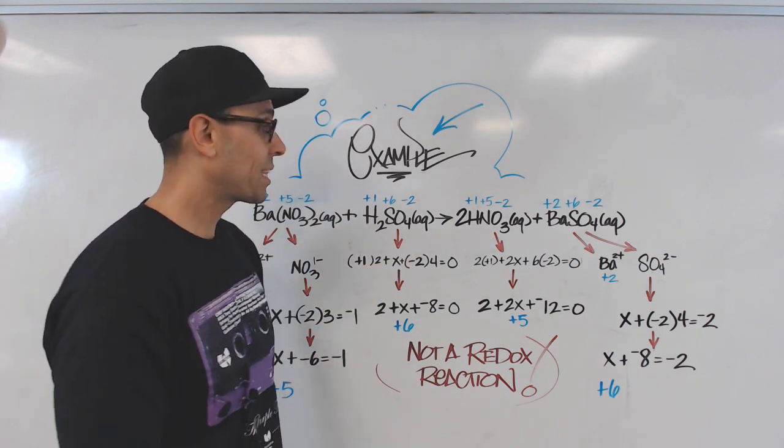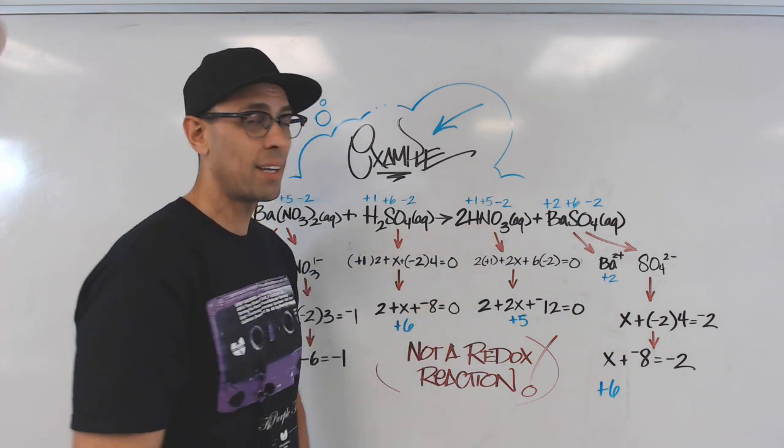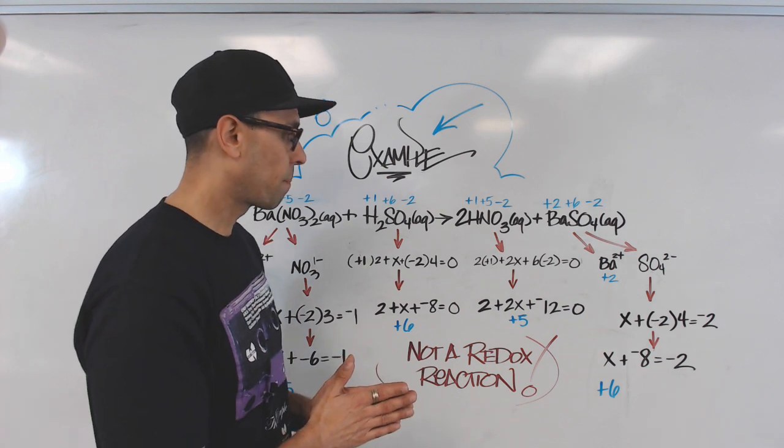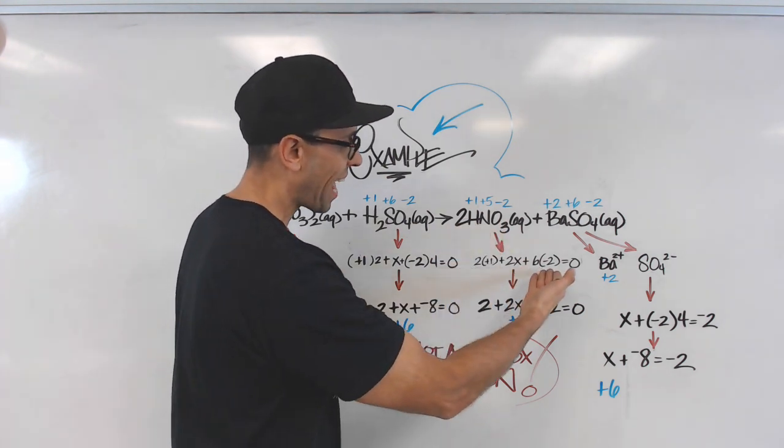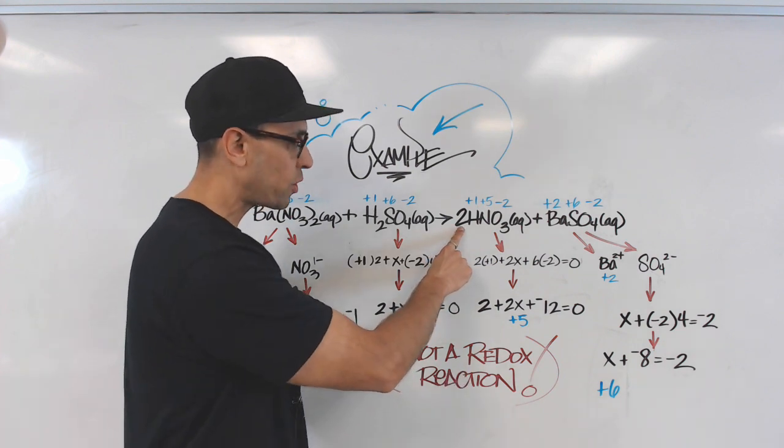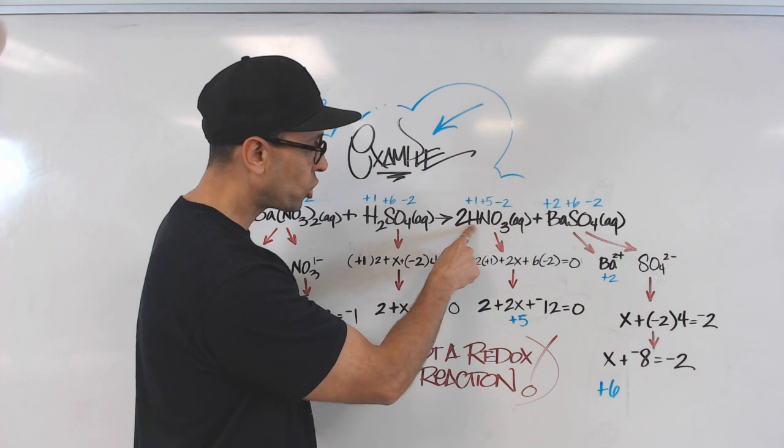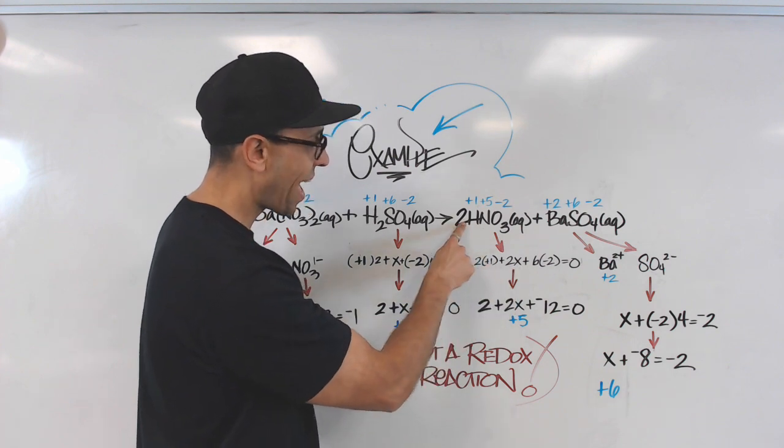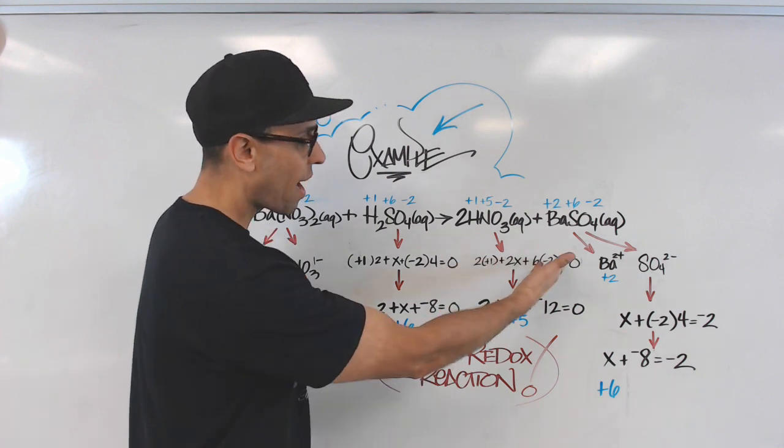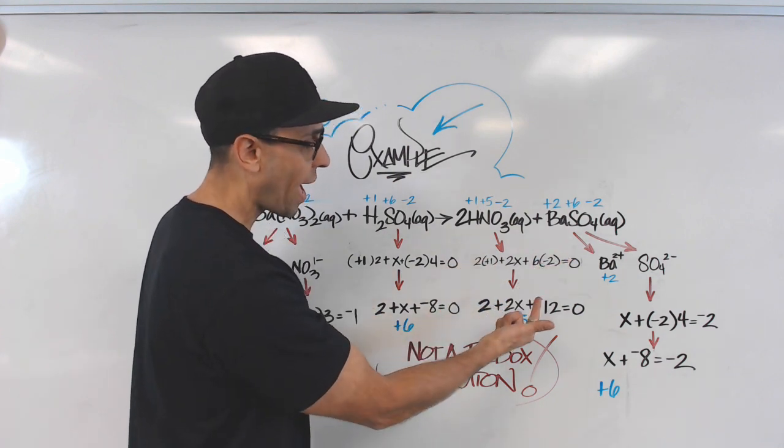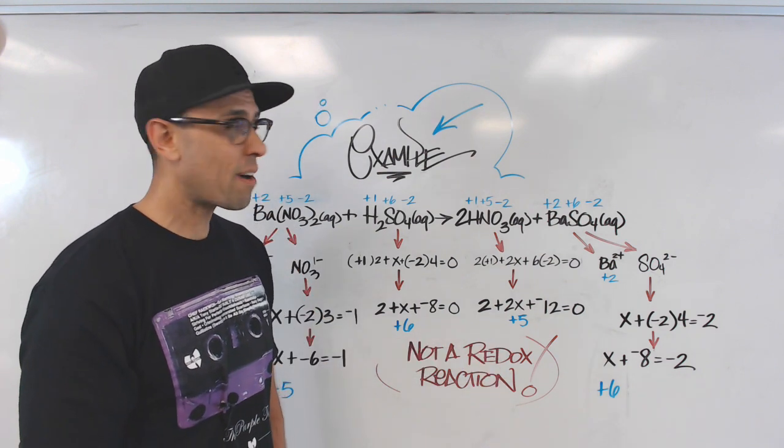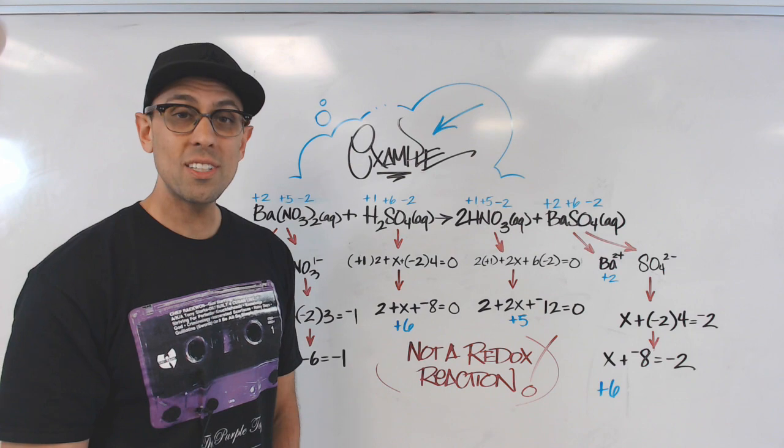Now we have another strong acid, nitric acid. Now again, we have hydrogen and oxygen, and we know their oxidation states with confidence. But nitrogen, I'm not so sure. Now again, this is a neutral molecule, so I set everything equal to zero. Here, I have to remember that this coefficient of two means there's two hydrogens, two nitrogens, and two times three, or six, oxygens. Simplifying that, I get two plus two x plus negative twelve equals zero. X must be positive five. That's the oxidation state of the nitrogen.